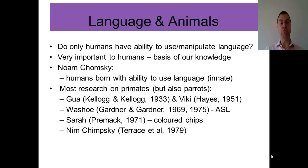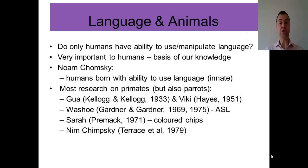We then moved on to a primate called Nim Chimpsky — deliberately a misspelling of Chomsky, because it was an attempt to prove Chomsky wrong, that in fact a chimpanzee called Nim could use language. We're now going to watch a couple of videos showing a quite famous gorilla by the name of Koko, and you can see her using some form of communication before we discuss whether that really is language.